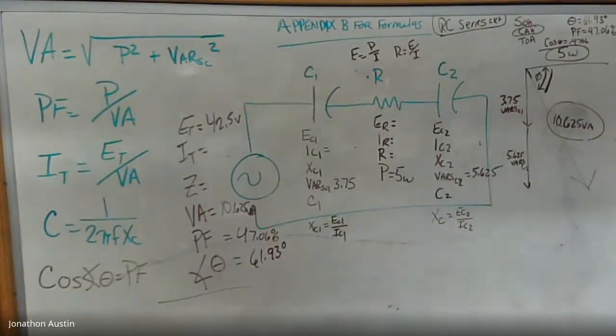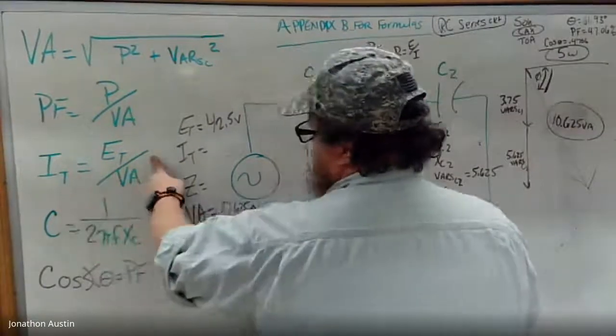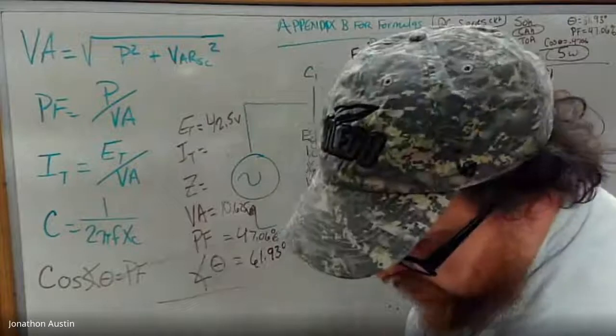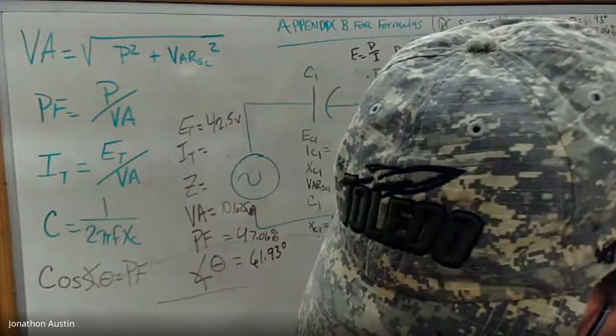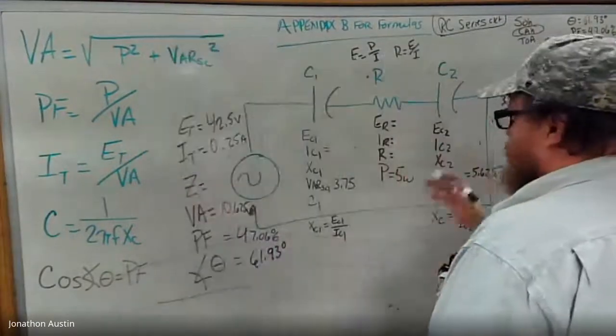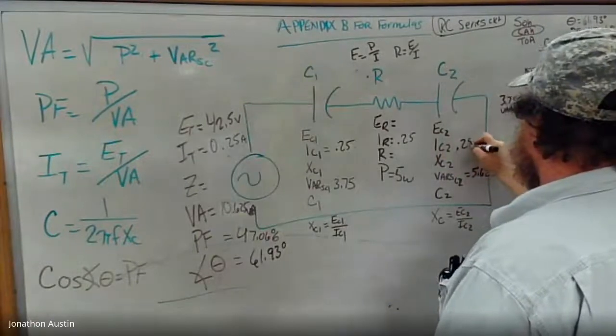Now to solve for your iTotal, that's the next thing I'm going to look for. I'm going to divide my eTotal by my volt amps, and that comes out to be 0.25 amps. In the book they put 0.0, but that's fine, I don't worry about that too much.